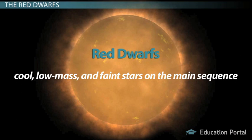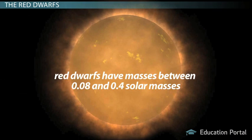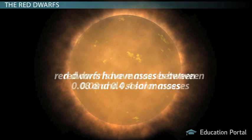Red dwarfs, cool, low mass, and faint stars on the main sequence, die differently from massive stars. Red dwarfs have masses between 0.08 and 0.4 solar masses. As a result, unlike massive stars, they don't have much weight to support and they do not have to burn through their hydrogen fuel very quickly.